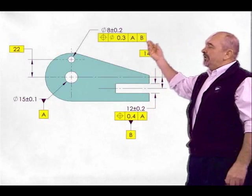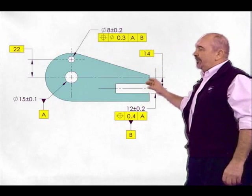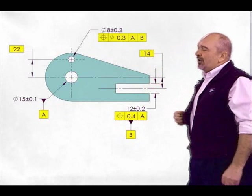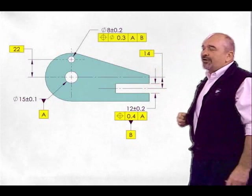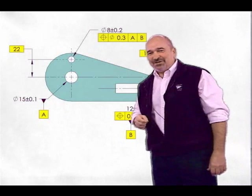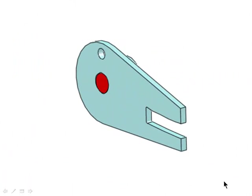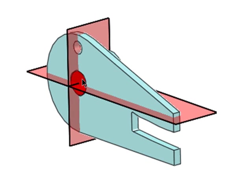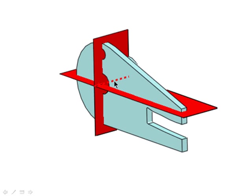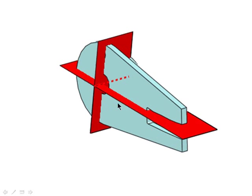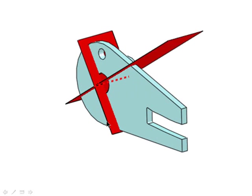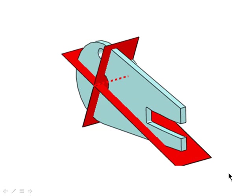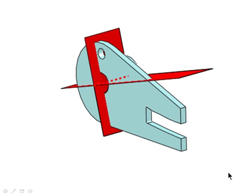My secondary datum feature B is also regardless of feature size, and it's this slot. Let's see how I use that slot to orient these datum planes. First, you would fill datum feature A with the largest inscribed cylinder. This gives you an axis, which is the intersection of two mutually perpendicular planes. The question is: how do I now orient these datum planes?